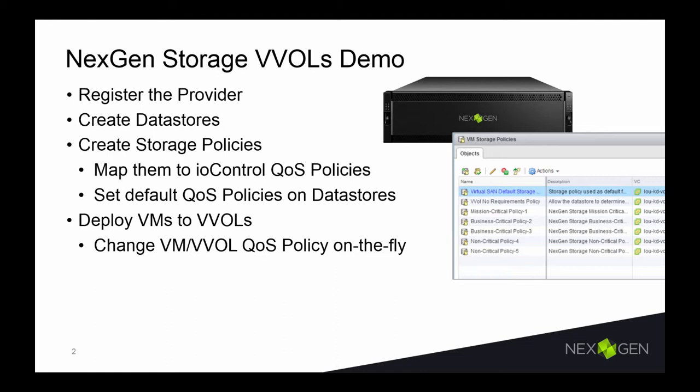In this demo, we will show how the NextGen Storage system integrates with vVols by first registering the VASA provider within vCenter. Next, configuring datastore containers for the vVols. Third, setting up the storage policies in vCenter to map to the QoS performance policies of the NextGen array. We will provision virtual machines to vVols located on the NextGen array, including changing the QoS performance policies within vCenter on the VM and watching it make those changes on the array itself.